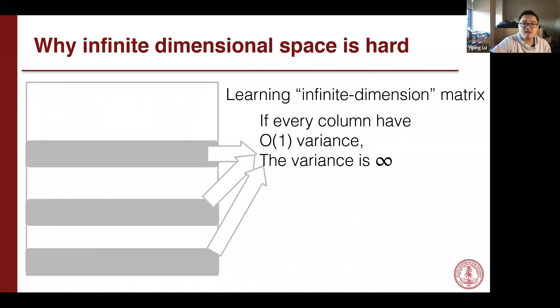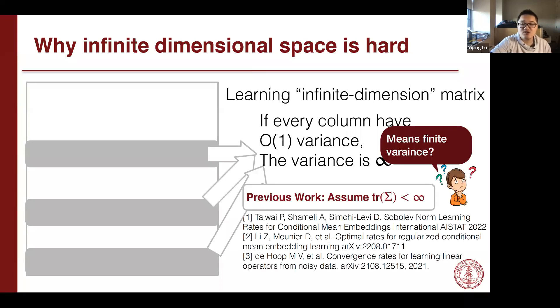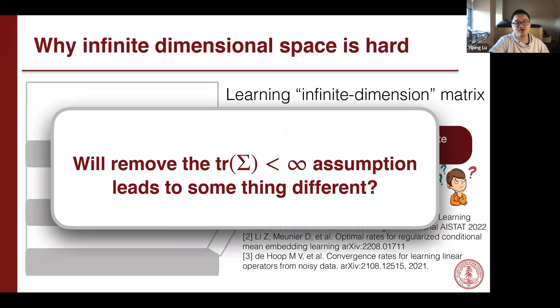So why is infinite dimensional learning hard? Infinite dimensional learning is actually learning an infinite dimensional matrix. The matrix may have high variance at each column so that the whole variance can be infinite. If you go to the literature, all the previous work always assumes that the output space, the trace of the output space covariance is less than infinite. This means finite variance and they have equivalent results as the finite dimensional matrix. In our work, we want to ask what if we remove this assumption, and whether this leads to some different lower bound and different machine learning algorithm.